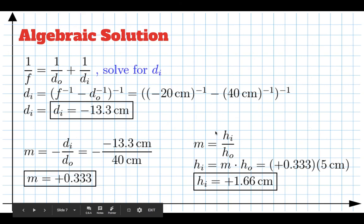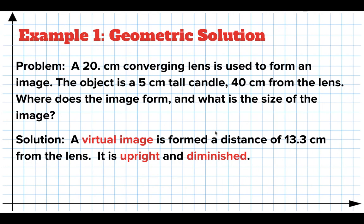In summary: we have a virtual image — we know this because the distance to the image was negative, and geometrically the light rays didn't cross there but just appeared to originate there. The image is formed 13.3 centimeters from the lens. It's upright because the magnification is positive, and diminished because the absolute value of the magnification is less than 1. For homework, log into homework 4 and make ray diagrams and algebraic solutions for diverging lens problems.